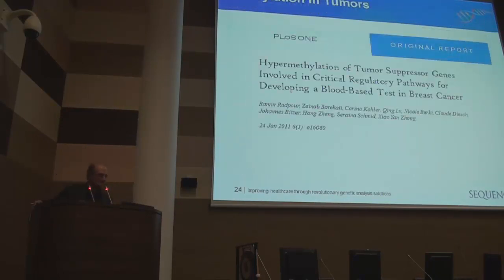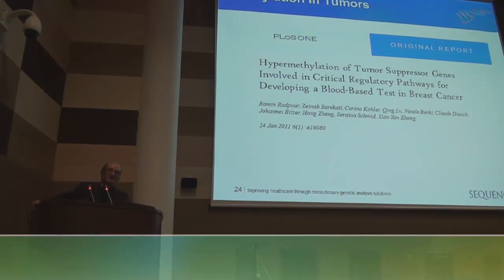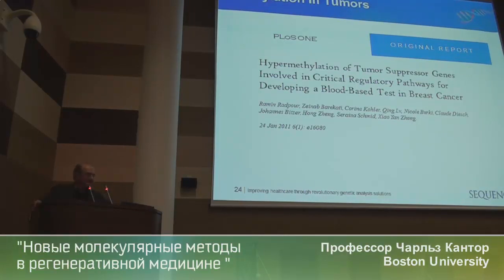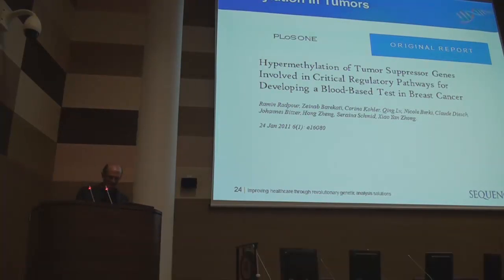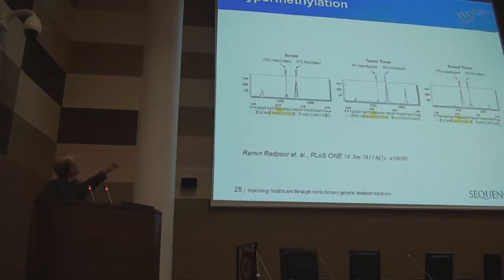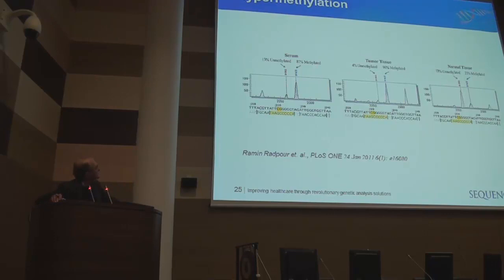Here's a case published a year ago looking at breast cancer, trying to develop a blood-based test for breast cancer using methylation. It's a very interesting paper, and I'm going to show you one gene and one methylation site just to indicate what's possible. If you look on the right, in normal tissue versus breast cancer, this particular site in the famous BRCA1 gene is methylated, which means the gene is basically silenced.